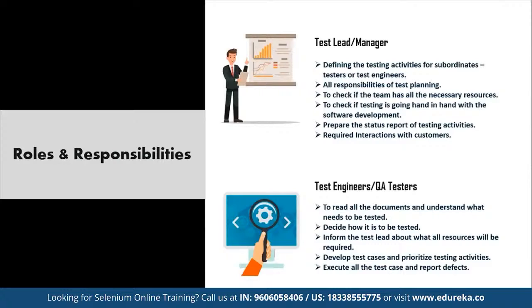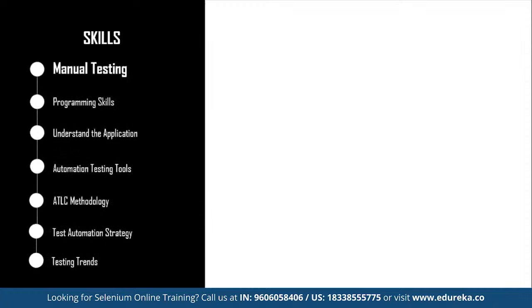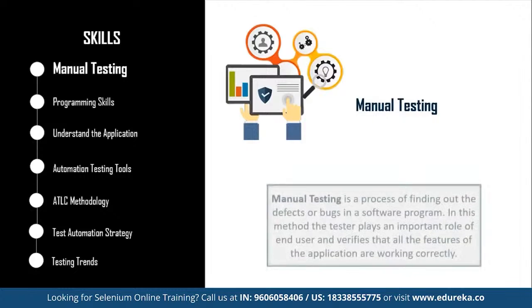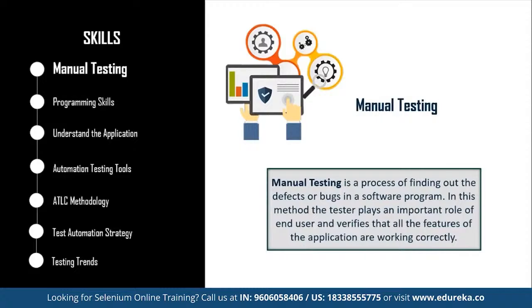How a software application shapes up during development entirely depends on how the software engineering team organizes work and implements various methodologies. Test automation engineers can save you from a world full of codes, and enterprises completely agree with this. This is why you see a lot of job opportunities in automation testing. I am going to explain in detail the 7 most important steps to becoming a test automation engineer. The first one is manual testing.